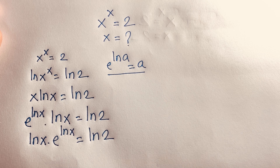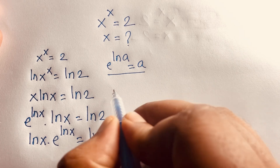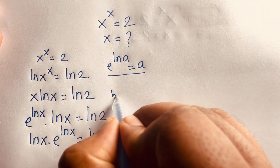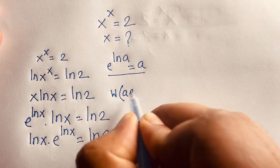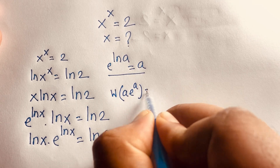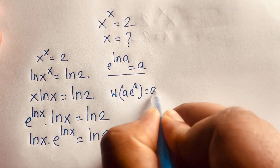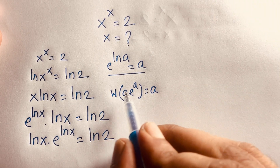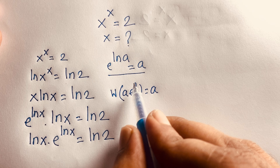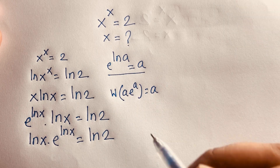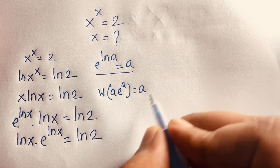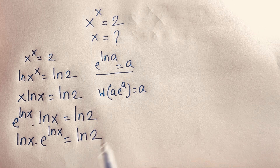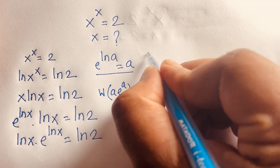To solve this, we apply the Lambert W function. The Lambert W function satisfies: W(a·e^a) = a. Applying the W function to both sides of our equation gives us a way to isolate the unknown.